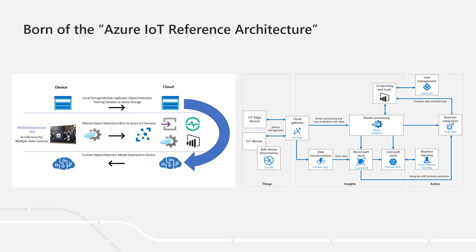In addition, we'll support the concept of MLOps using a camera tagging module on the device that can capture frames from our video sources and mirror them into a cold storage service. These can later be used to enhance our object detection model as we use it to train additional samples. We can then export this updated model from the Cognitive Services Custom Vision service to update the running object detection model on the device.